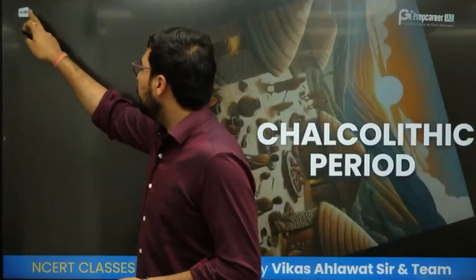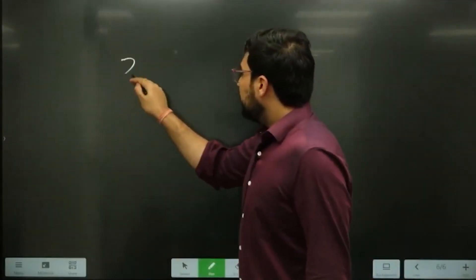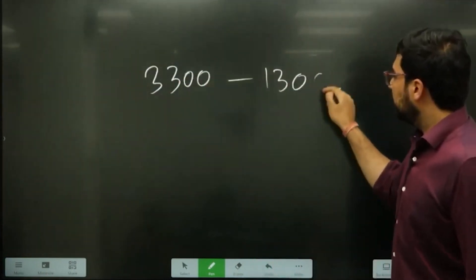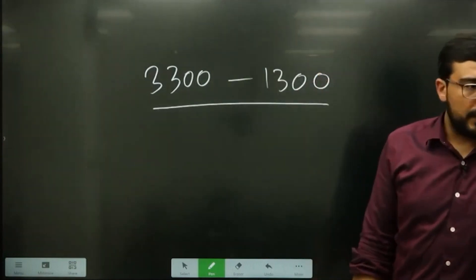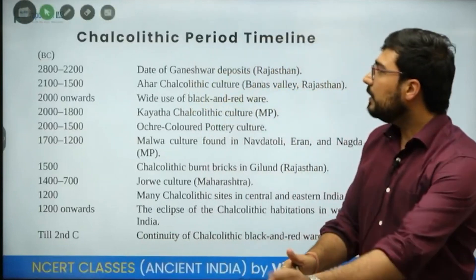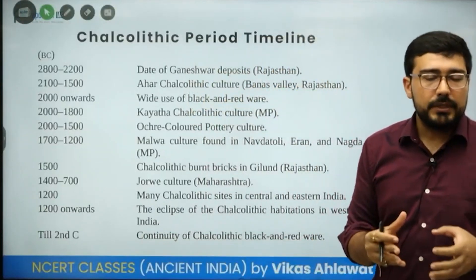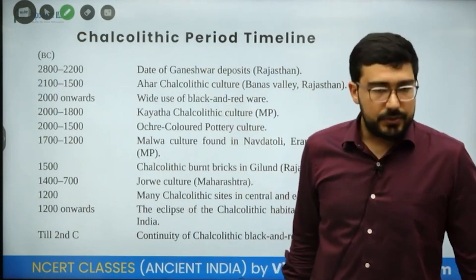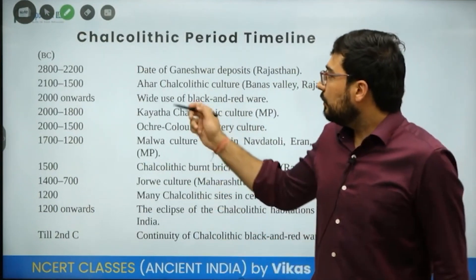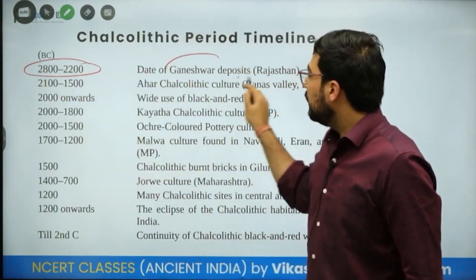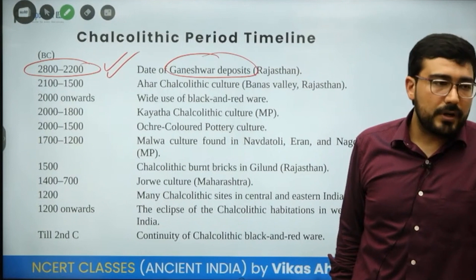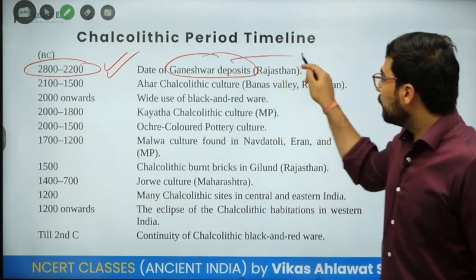Chalcolithic cultures developed alongside the Harappan civilization, whose time period runs from 3300 BC to 1300 BC. During this same period, certain Chalcolithic cultures existed that were using only copper, not bronze, and were mostly rural in nature. Ganeshwar is one such culture — it is contemporary with the Harappan civilization, and copper used to be procured from there.